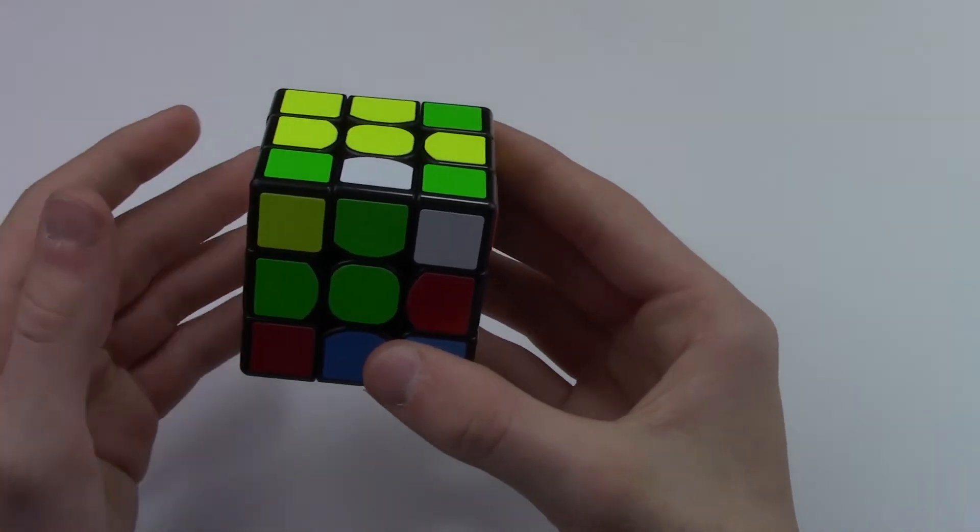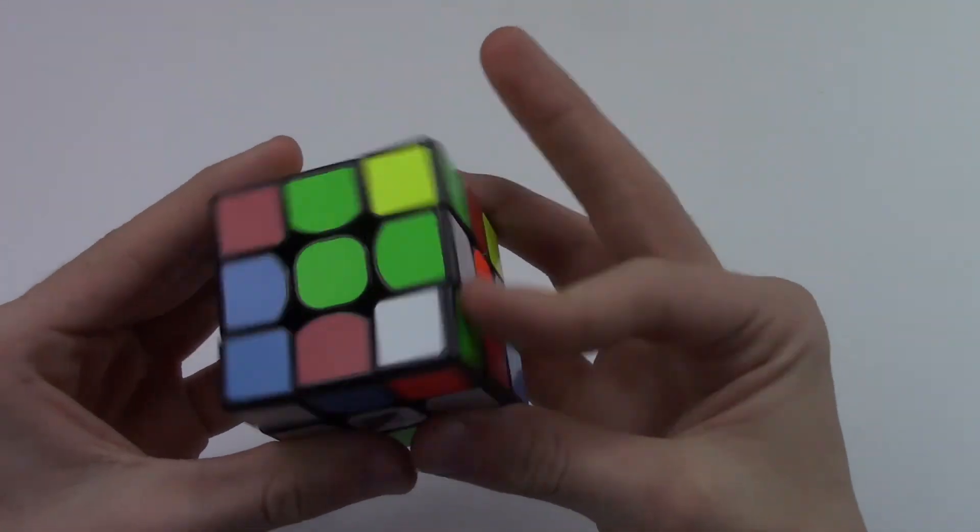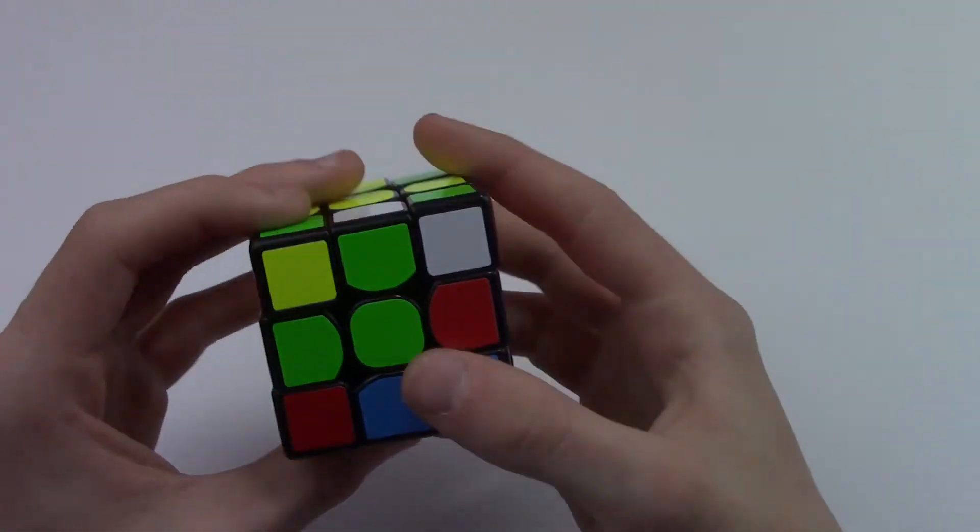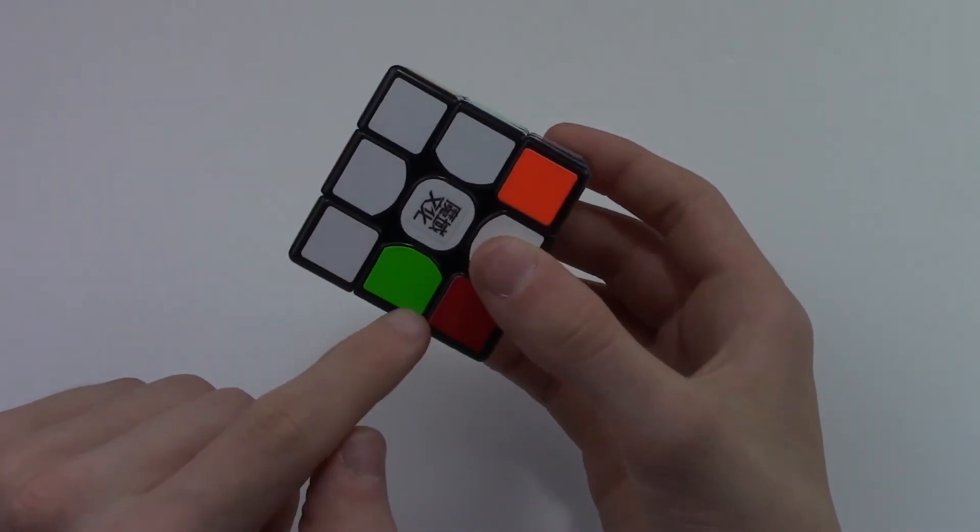Now the last edge piece that we're going to solve is the green. Now the green is lined up, so if I try to solve it, it'd push the blue piece out. So that's not what we want to do. Now the place that the green piece wants to go, or needs to go, is right here.